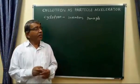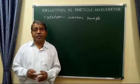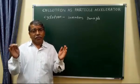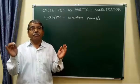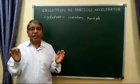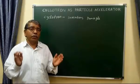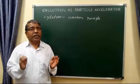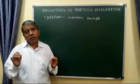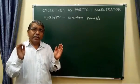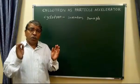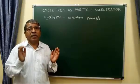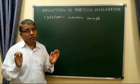Let us move to the invention and principle of the cyclotron. The cyclotron was first built by Ernest Lawrence and Milton Livingston in the years 1929–31 at the University of California, Berkeley, in the United States of America. In 1939, Professor Lawrence was awarded the Nobel Prize in Physics for his achievement in the conception and development of the cyclotron.